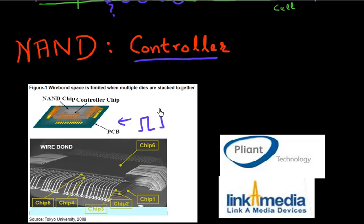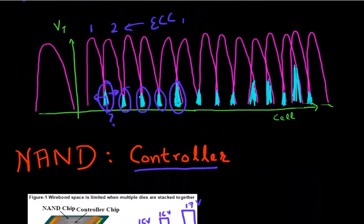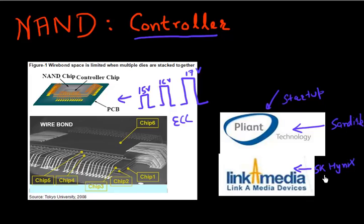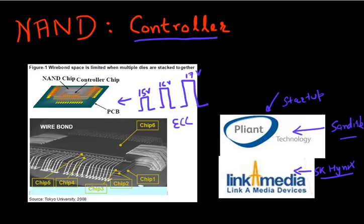And nowadays, to program MLC cells, you need different program voltages. So this chip has to generate multiple program voltages. Also, it must be smart enough to distinguish between these two states and correct for the cell where it belongs. So there has been a lot of startup action in this field as well. And these are two local startups, Pliant, which was acquired by Sandisk and Linkamedia, which was very recently acquired by SK Hynix. So there's a lot of exciting stuff happening in this controller space.